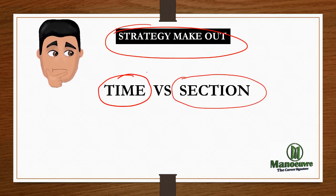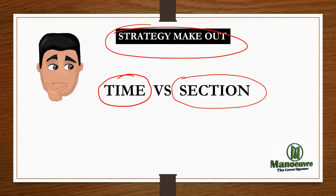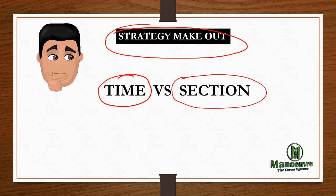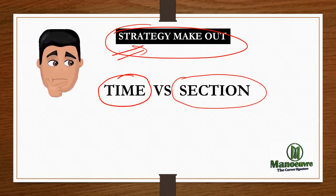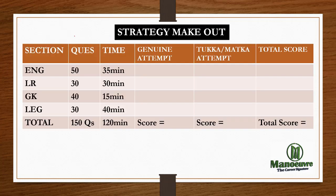This will help you to run through the section and manage your time. Make sure that the strategy part is pre-defined. If you have already done this, well and good; if not, you can follow my strategy. This chart has the sections, number of questions, time you are planning to give for each section, genuine attempt, how many questions you have done by guess work, and total score.